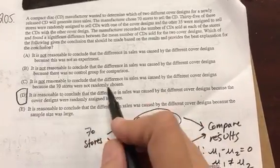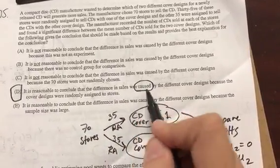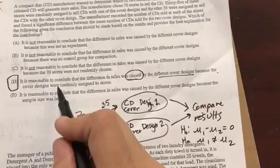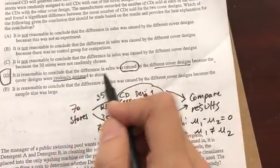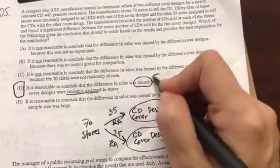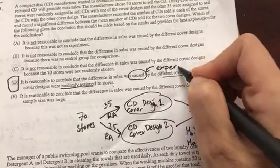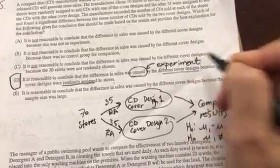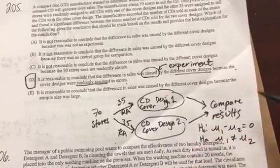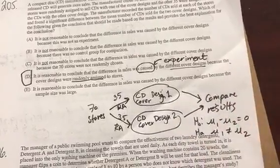It is reasonable to conclude that the difference was caused by the different cover design because they were randomly assigned. That's absolutely true. We can finally say causation if it was a well-designed experiment and you isolated the other variables, but that's only true if they're randomly assigned.